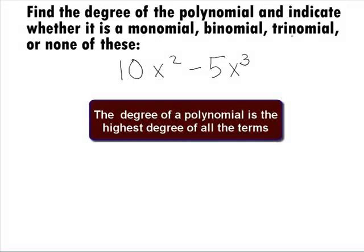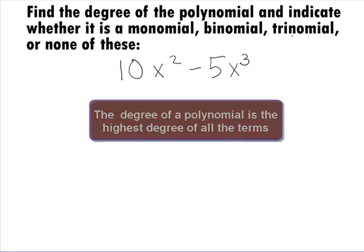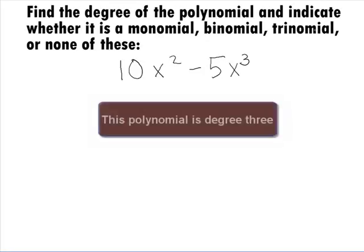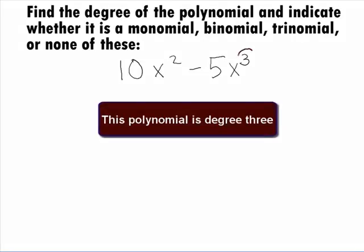When looking for the degree of a polynomial, we need to find the term with the highest degree. This will give us the value that we are seeking. It looks like the term with the highest degree is negative 5x to the 3rd power. The degree of this term, as well as the polynomial, is 3.